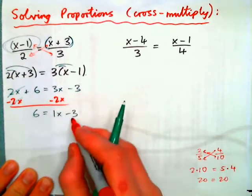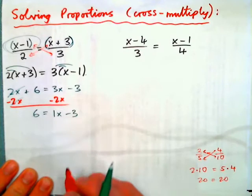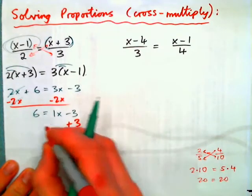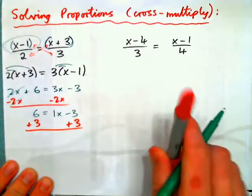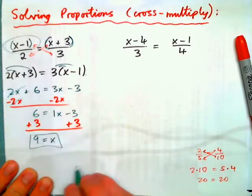So to get x by itself, I need to get rid of negative 3. Or undo subtracting 3. By adding 3 to both sides. To get 9 equals 1x. Or 9 equals x.